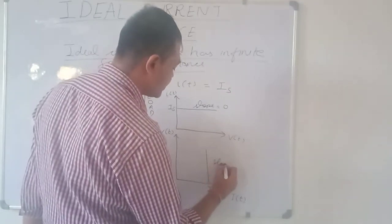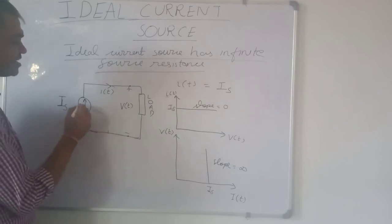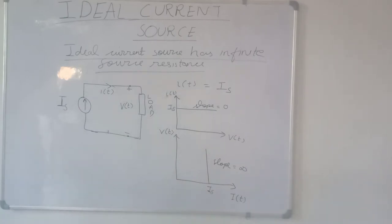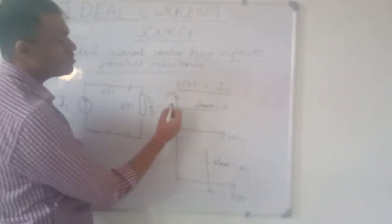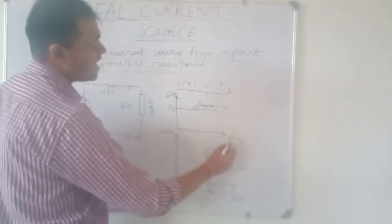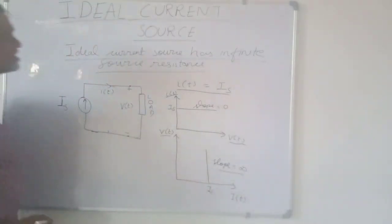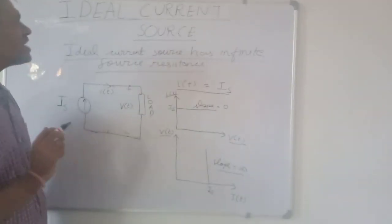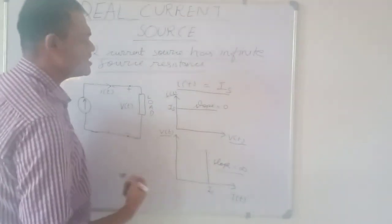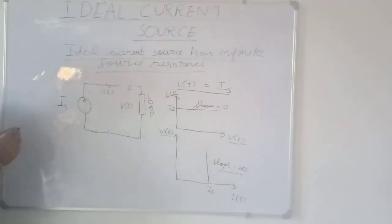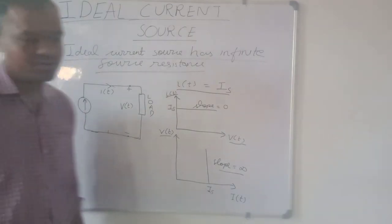It is always equal to Is, so the slope here is infinite. The ideal current source has infinite source resistance, which is replaced by an open circuit, and it always provides current Is to the load. The voltage across the load is Vt. The IV characteristic curve is a horizontal line parallel to the X axis with slope 0, and the VI characteristic curve is a vertical line parallel to the Y axis with slope equal to infinite. Note that source transformation cannot be applied to an ideal voltage source or an ideal current source, because their VI characteristics never change. Source transformation can only be applied to a practical current source or practical voltage source, which we will see in the next video.